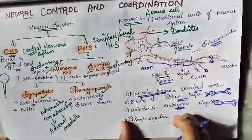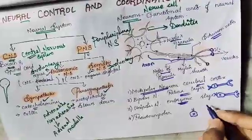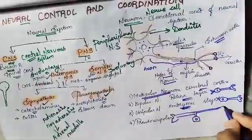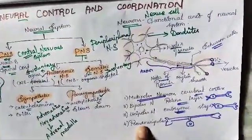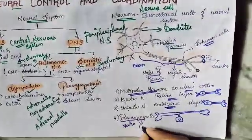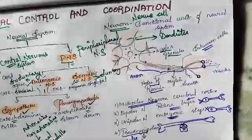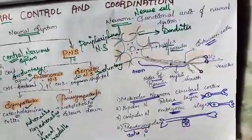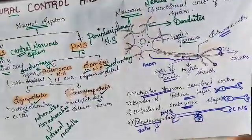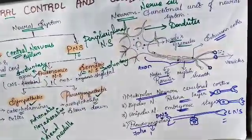Pseudo-unipolar is a special case: one cell body and one axon, but it divides into two. Pseudo means false, uni means one. So it appears as one pole, but it divides further. One branch reaches the central nervous system and one reaches the peripheral nervous system, performing the functions of both.